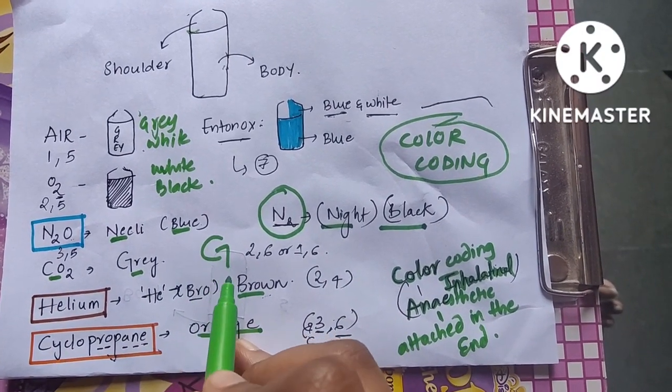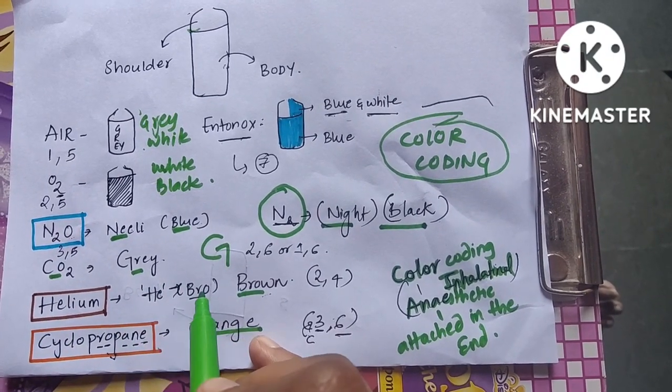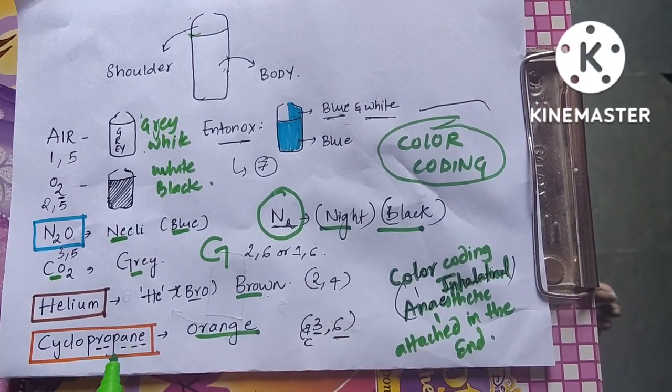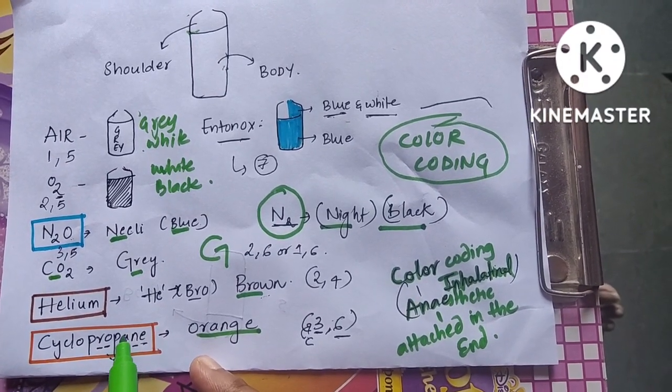Helium - he is a bro - so brown in color. Cyclopropane spelling has orange hidden in it: O-R-A-N, make P as G and E, orange. Cyclopropane is orange in color.